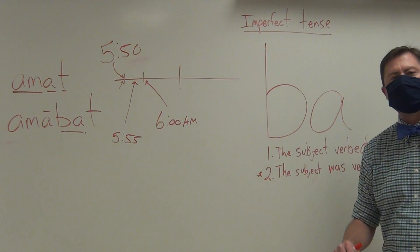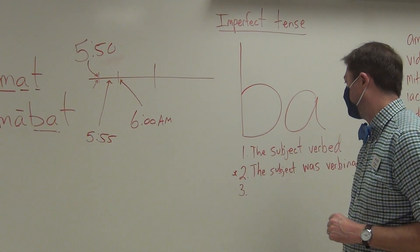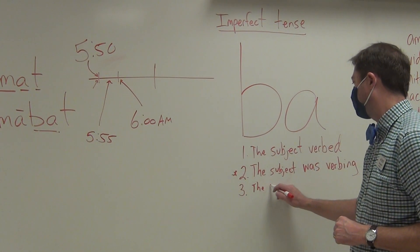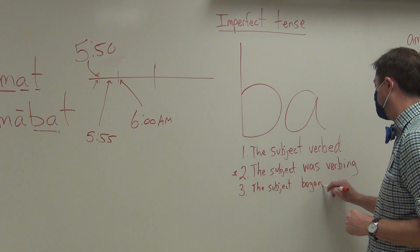Now there are other ways, and there are lesser ways in my opinion, that we can express the imperfect tense. One, we can say: the subject began verbing.